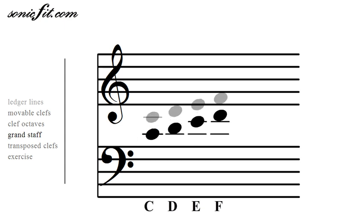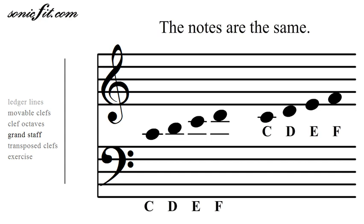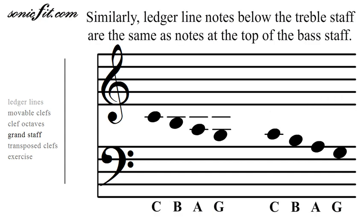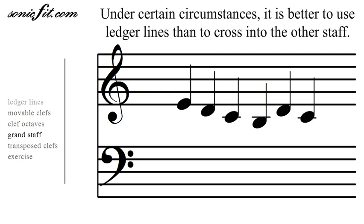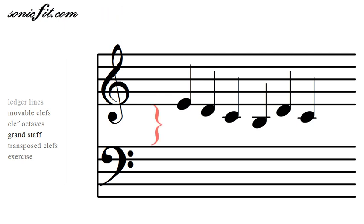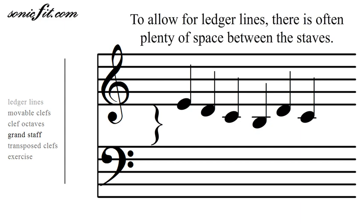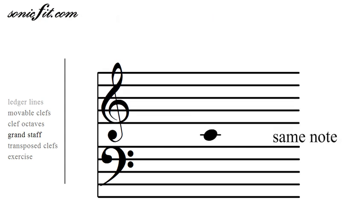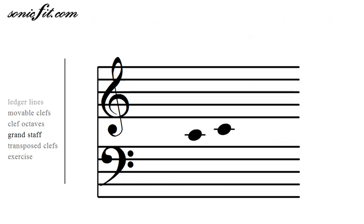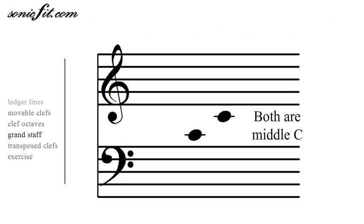This diagram shows that the four notes on the left are the same four notes as the ones on the right. Similarly, ledger lines below the treble clef are the same notes as those on top of the bass staff. We often want to use ledger lines rather than crossing staves, so there's extra room placed between the staves. This note is middle C whether it's shown in the bass clef or in the treble clef — it's the same note.